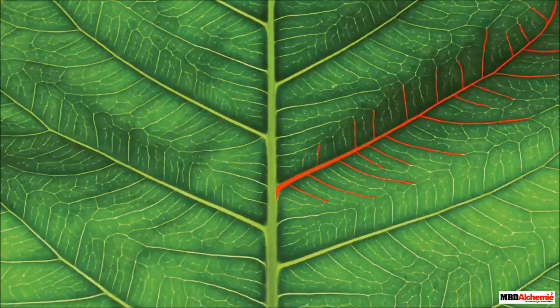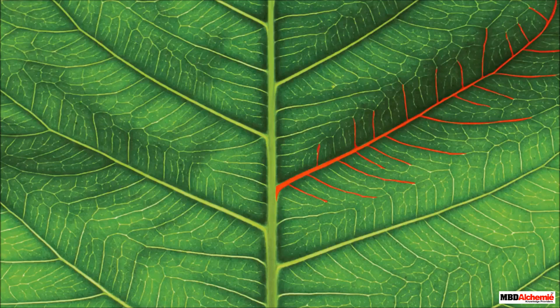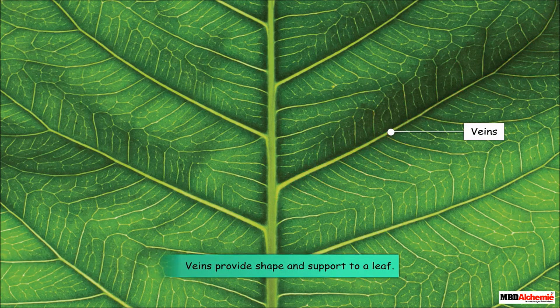There are numerous tiny lines that run throughout a leaf. They are called veins. All these veins along with the midrib provide shape and support to a leaf.